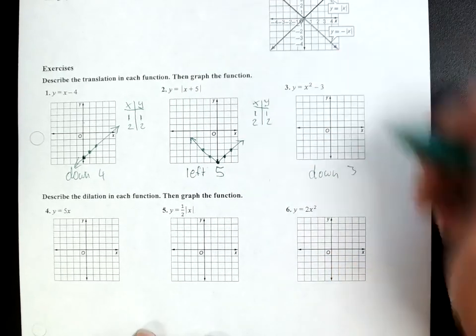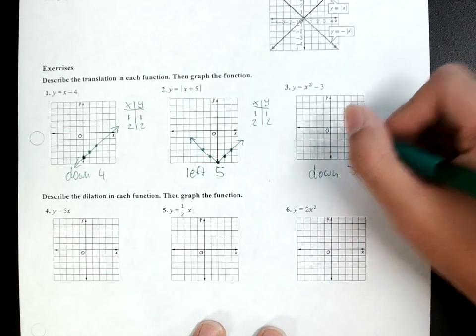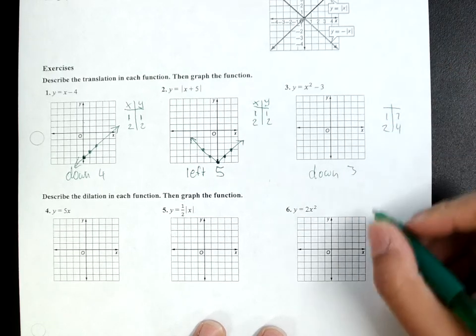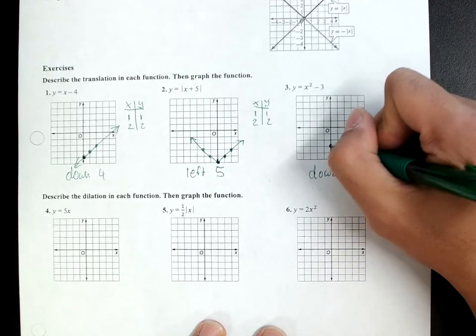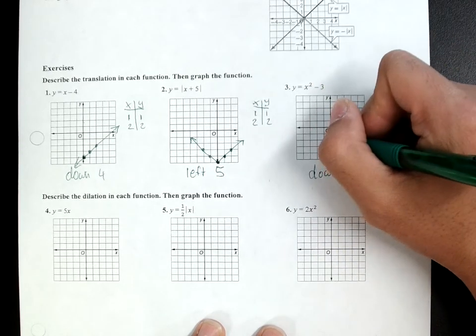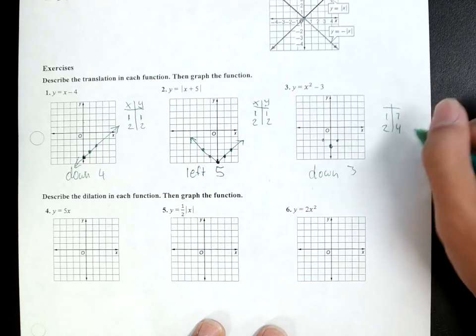Now, with 3, it's a parabola. So, I know I'm going to use 1, 1, 2, 4. So, I'll go down 3, and I have 1, 1, 2, 4.